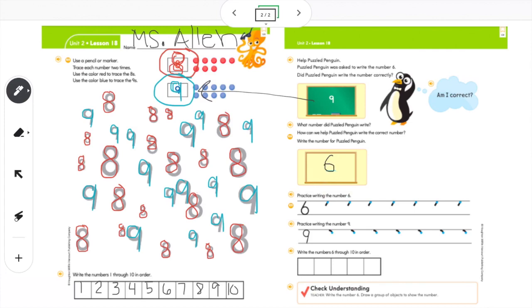Now at the bottom it says practice writing the number six. Remember to start at that blue dot and follow the stick down. It gives you a start for how your number should be. I am going to start at the blue dot, follow the stick down, and then curve around. Blue dot, follow the stick down, curve around. Those are some good looking sixes.